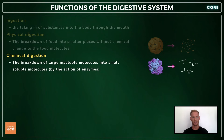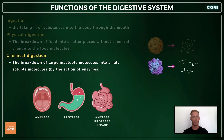Chemical digestion is the breakdown of large insoluble molecules into small soluble molecules by the action of enzymes. In the mouth, salivary amylase breaks down starch; in the stomach, proteases break down proteins; and in the small intestine, pancreatic enzymes break down carbohydrates, fats, and proteins into small soluble molecules for absorption.